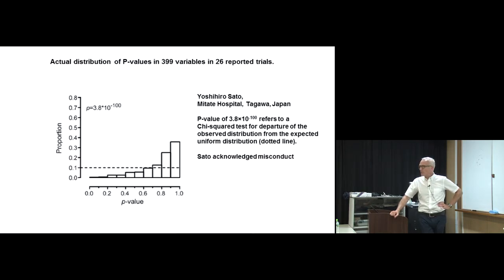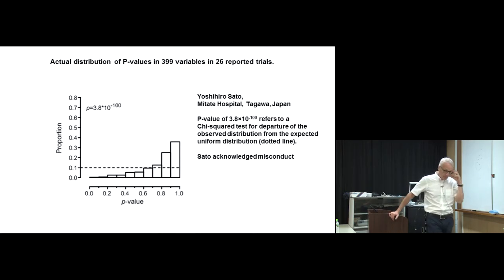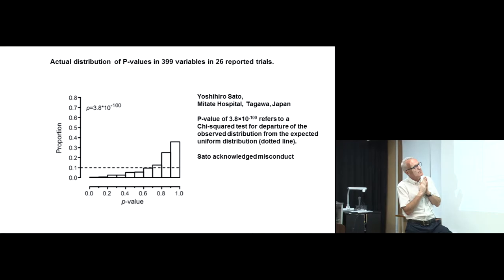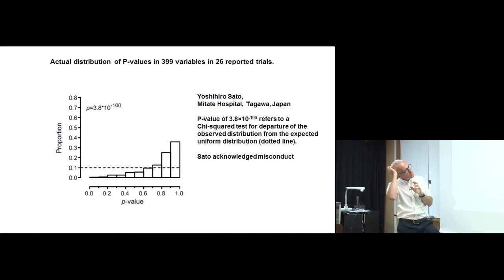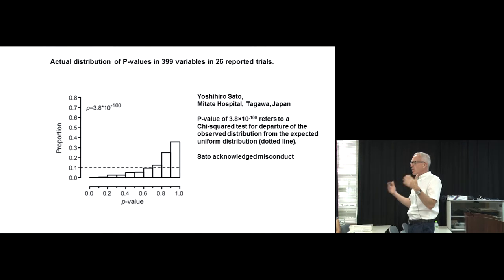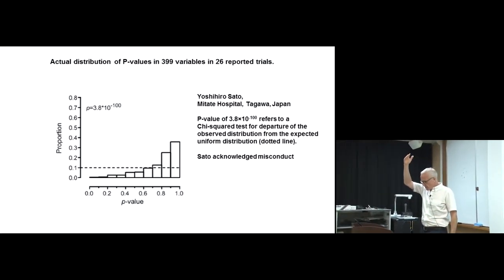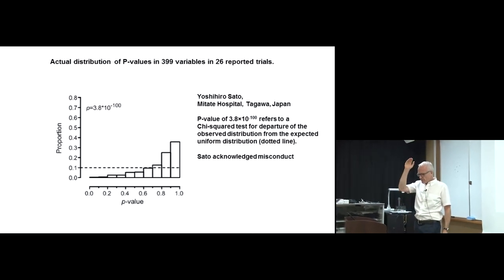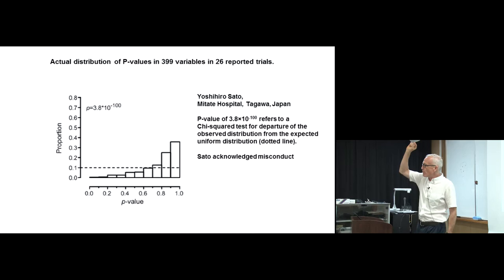Have you heard of Yoshihiro Sato from Mitate Hospital? It's a reasonably well-known case of misconduct for people interested in this area. He's a researcher in a hospital in Japan who researches a drug to increase bone density. He makes randomized trials, and somebody looked at the distribution of p-values in his randomized trials — specifically the distribution of p-values for baseline variables.